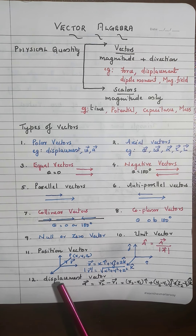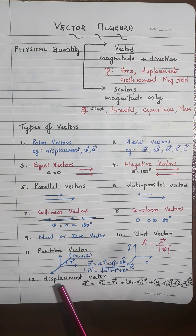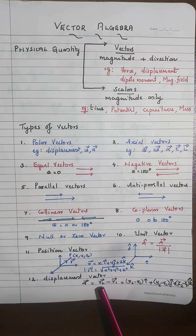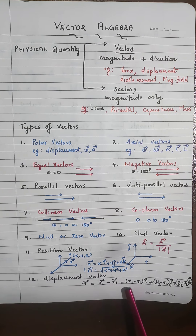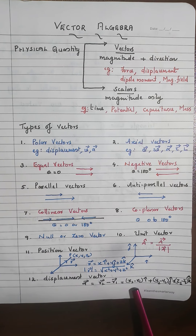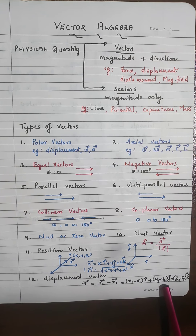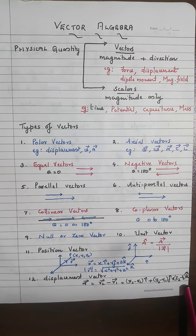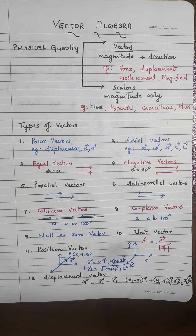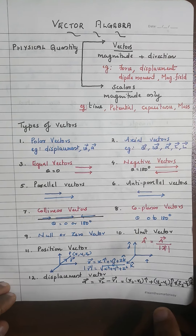If a particle moves from one point to another, with initial position vector r₁ and final position vector r₂, then the displacement vector can be represented as (x₂ − x₁)î + (y₂ − y₁)ĵ + (z₂ − z₁)k̂. These are some of the basic concepts in vector algebra, and we now move to the next very important concept.